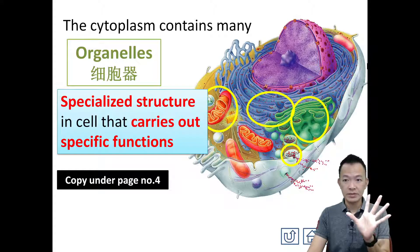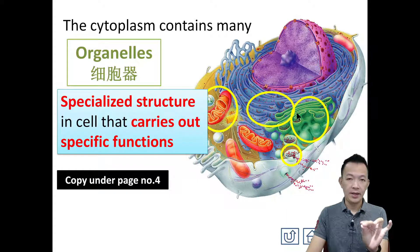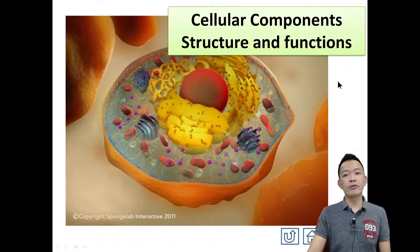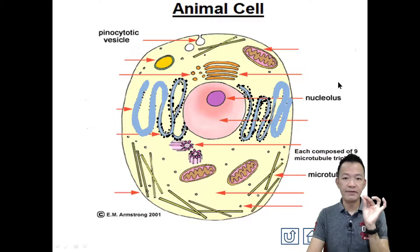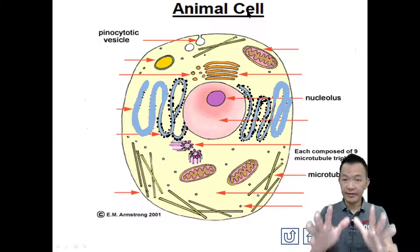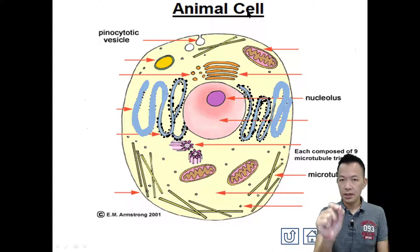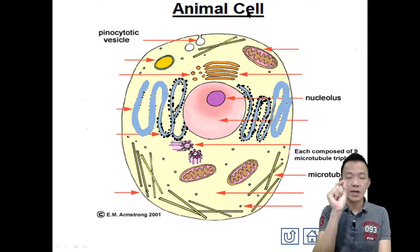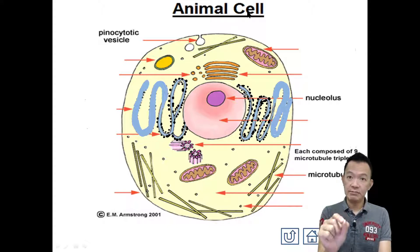So what are the organelles we have inside the cell? 细胞里面到底有什么细胞器呢? 这些细胞器都躲在细胞浆那边. So follow me, page number 4, we start from the animal cell. For now I just talk about the structure and tell you the name only - I don't talk about their function yet.